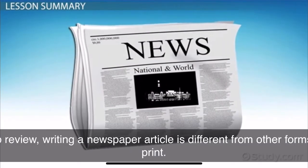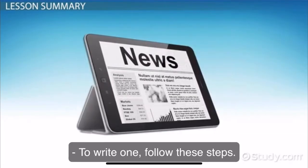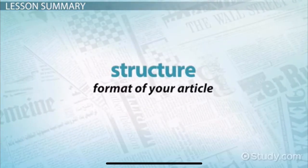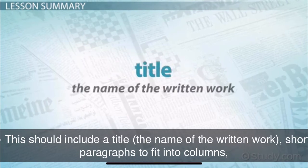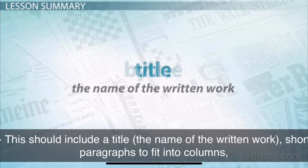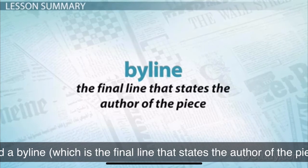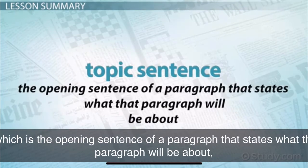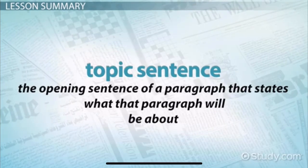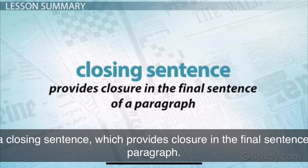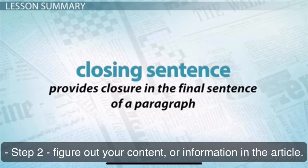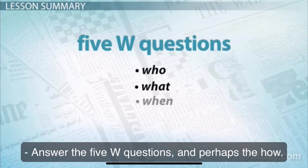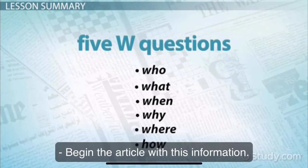To review, writing a newspaper article is different from other forms of print. To write one, follow these steps. Step 1: Determine the structure or format of your article. This should include a title, the name of the written work, short paragraphs to fit into a column, and a byline, which is the final line that states the author of the piece. Remember that you don't need to have a topic sentence or a closing sentence. Step 2: Figure out your content or information in the article. Answer the five W questions, and perhaps the how. Begin the article with this information.